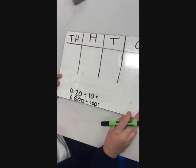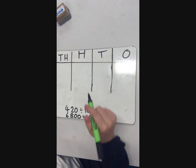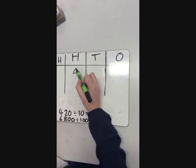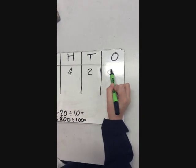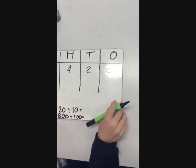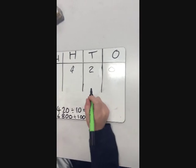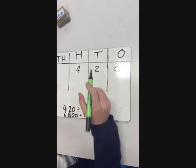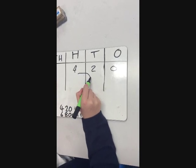So 420 divided by 10. You have to put 420 in with a placeholder, otherwise it will slip back. And then you have to divide it by 10, so it all needs to go down a column.